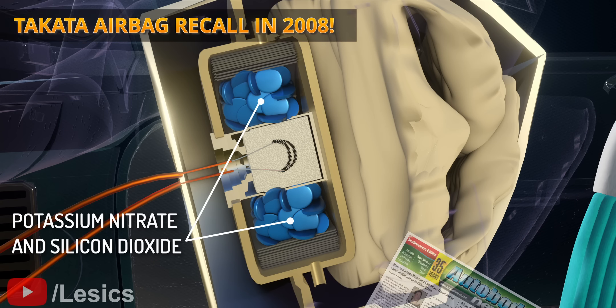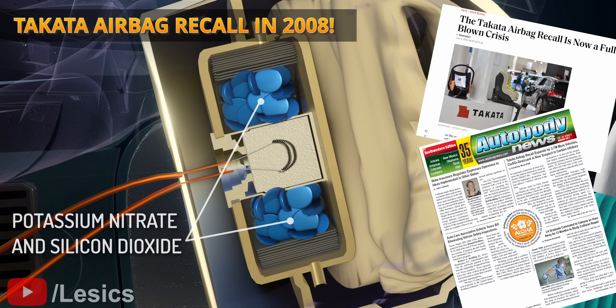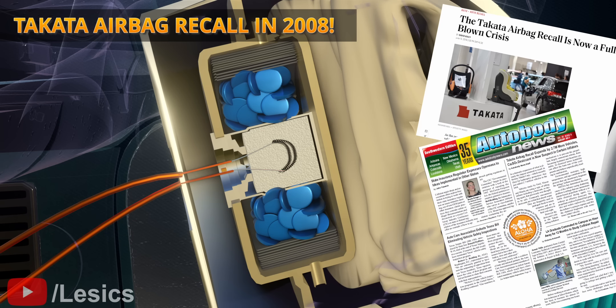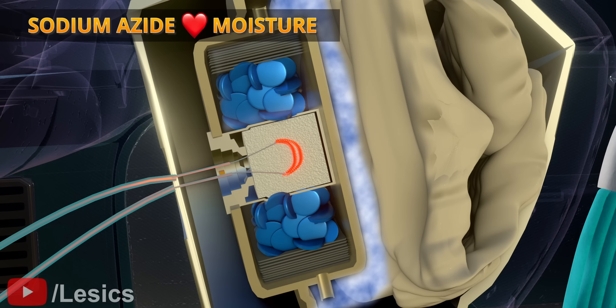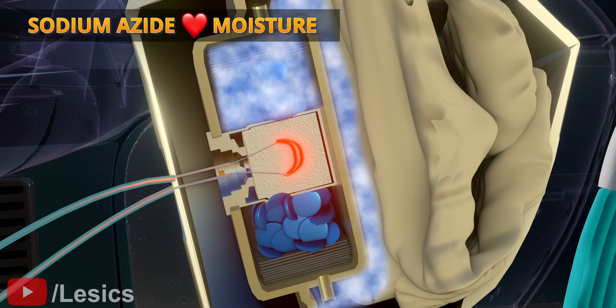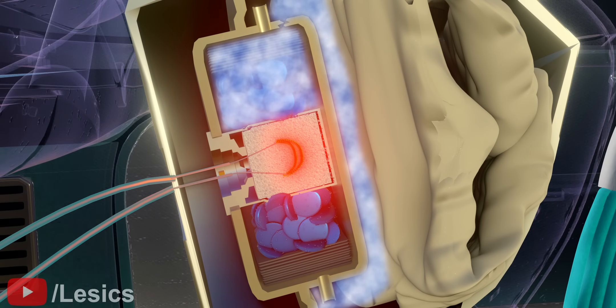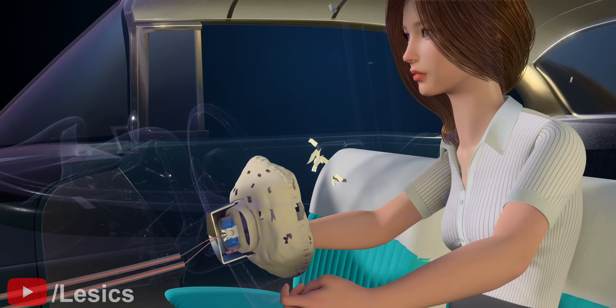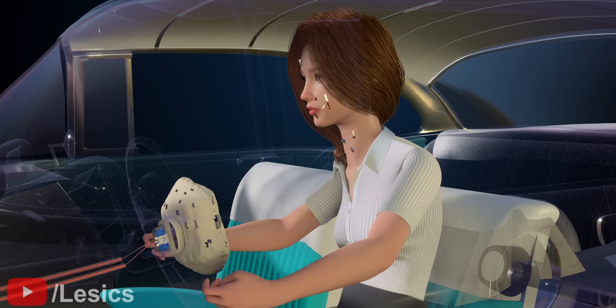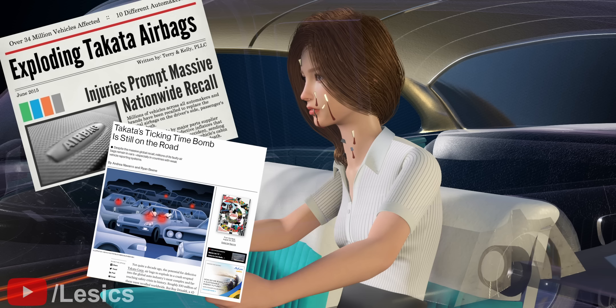Do you remember the infamous Takata's 67 million airbag recall incident? This incident happened due to a notorious property of sodium azide. They absorb moisture content easily. If there is a leakage in the design stage or manufacturing, sodium azide will absorb moisture. After the moisture absorption, when triggered, the chemical will undergo violent explosions, causing the rupturing of airbags and shrapnel flying to the passengers. This is exactly what happened with Takata's airbags. Eventually, the company went bankrupt.